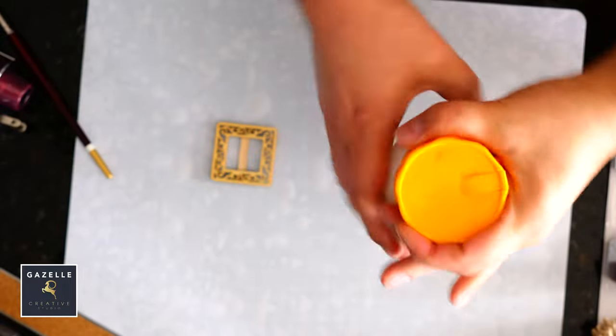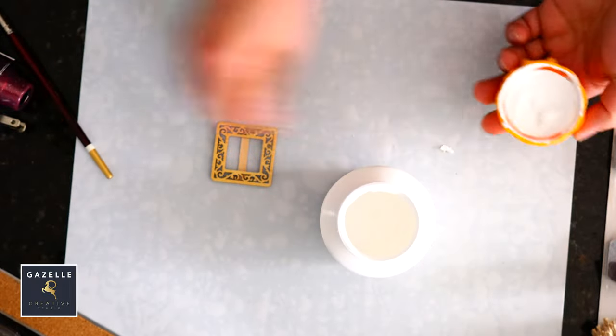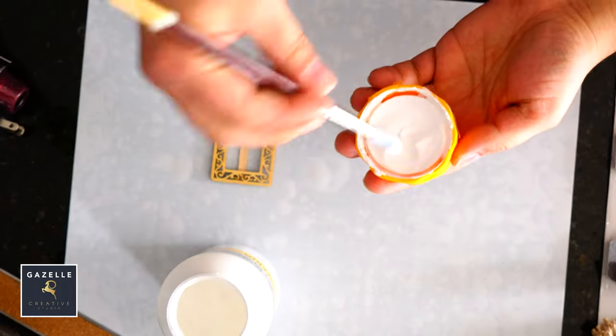I will paint the buckle white and glue the belt around the vase and we should be done with this project.